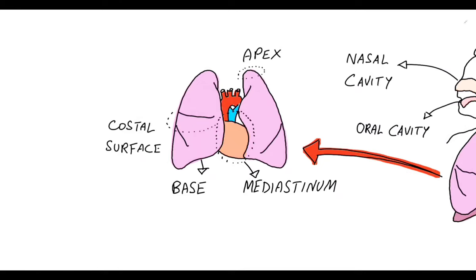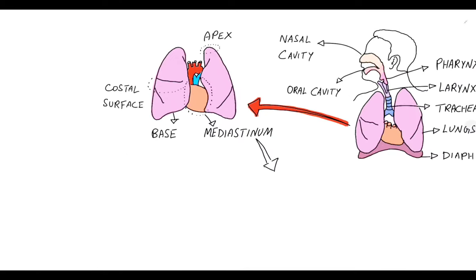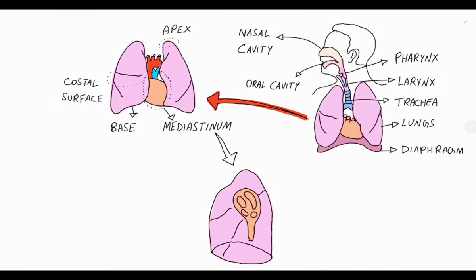Now let us take a closer look at the lungs medial surface. The medial surface contains the hilum, which is a depressed surface that serves as an entry point and an exit point. The hilum contains openings for the bronchus, pulmonary artery and two pulmonary veins.